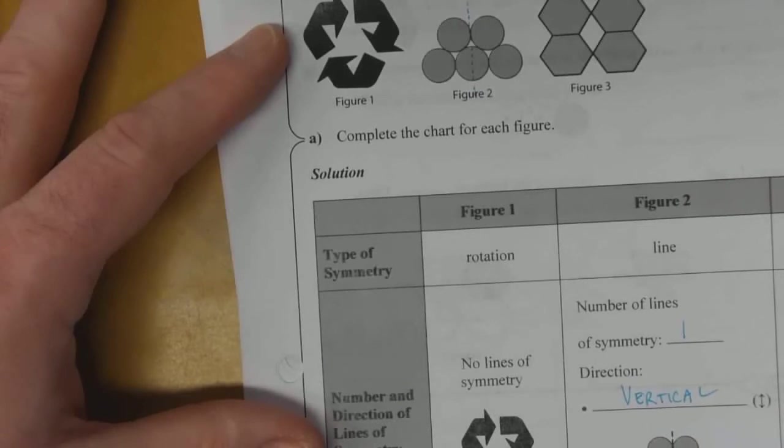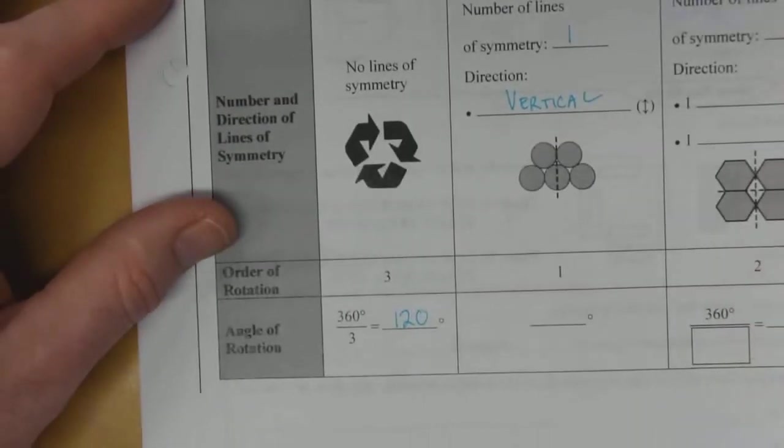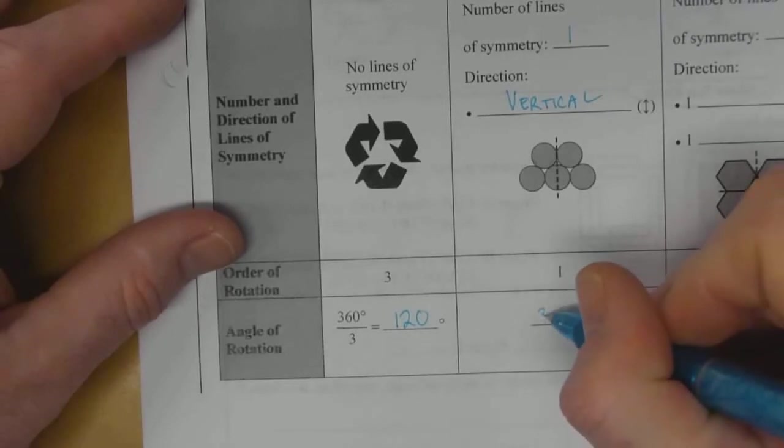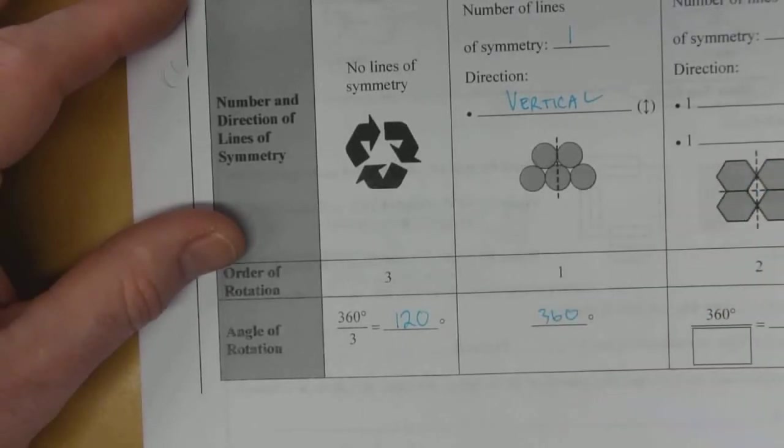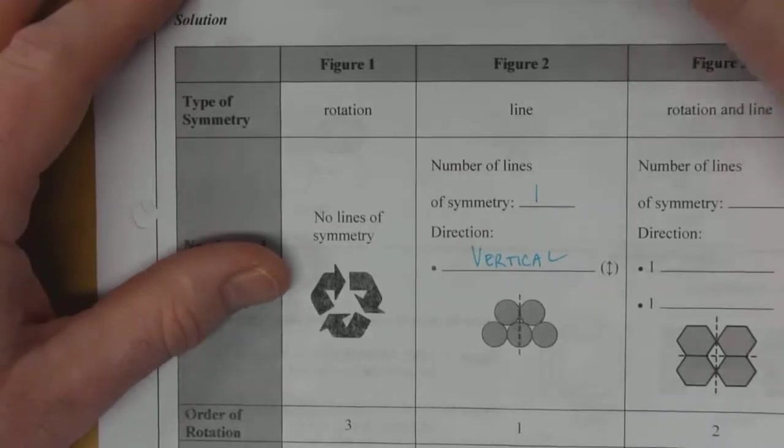So our order of rotation is just one, and that's 360 degrees to get back to the same shape. Figure 3...